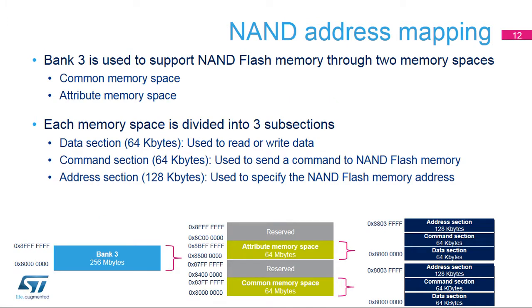Bank 3 is used to interface with the NAND Flash memory. It is divided into two memory spaces: common memory space and attribute memory space. Both spaces are similar. The common memory space is for all NAND Flash read and write accesses, except when writing the last address byte to the NAND Flash device, where the CPU must write to the attribute memory space. This allows implementation of the pre-weight functionality needed by certain NAND Flash memories by writing the last address byte with different timings.